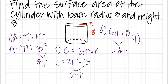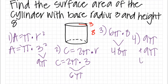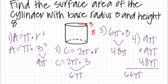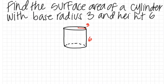The last step is to find the sum by adding the top, the bottom, and the sides of the cylinder. We end up with 66π square units. Since surface area problems may be hard for some people, I'll be demonstrating one more surface area problem.